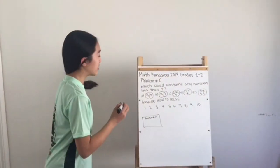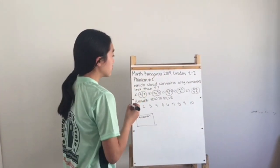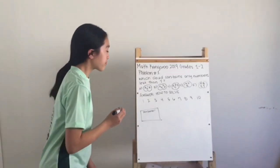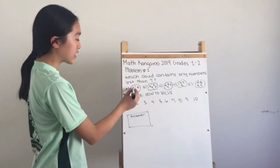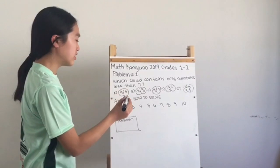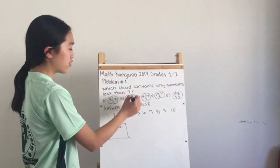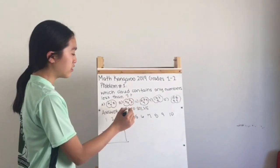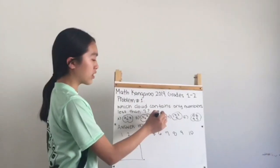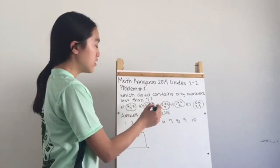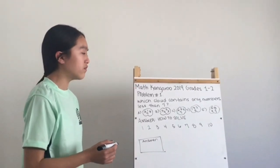Problem number one asks: which cloud contains only numbers less than seven? Cloud A has six, one, eight, and seven. Cloud B has five, two, three, and nine. Cloud C has six, two, four, and seven. Cloud D has one, three, two, and five.